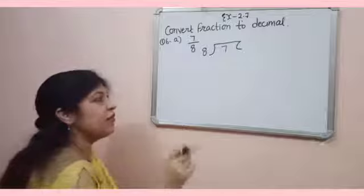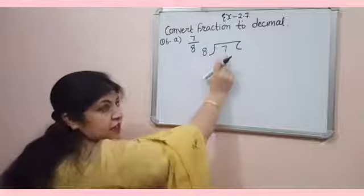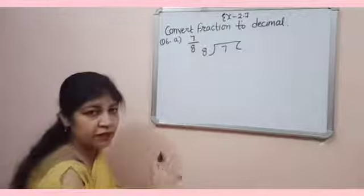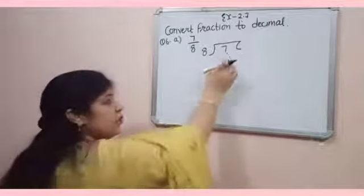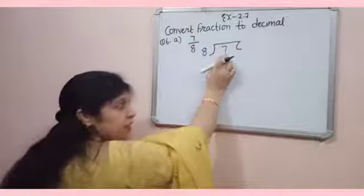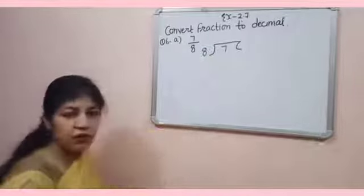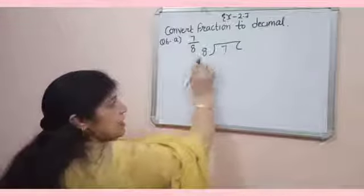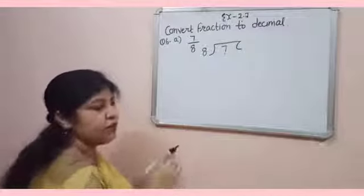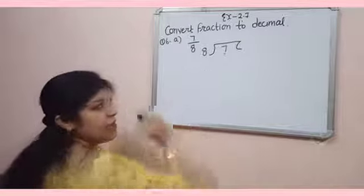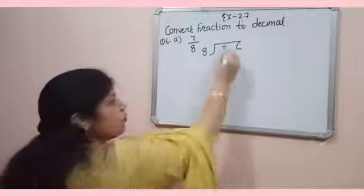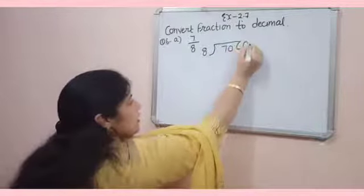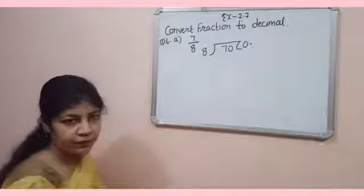It will always be dividend. Here the numerator is 7, smaller than denominator, but doesn't matter. The numerator will always be dividend and denominator will always be divisor. Now, 7 is less than 8, it will not be divisible by 8. So we will write 0 here. If you write 0, you have to write decimal.